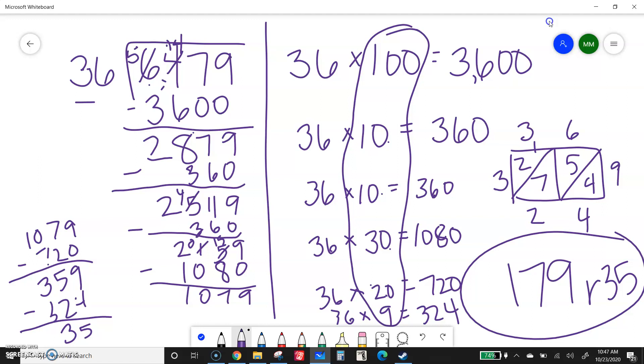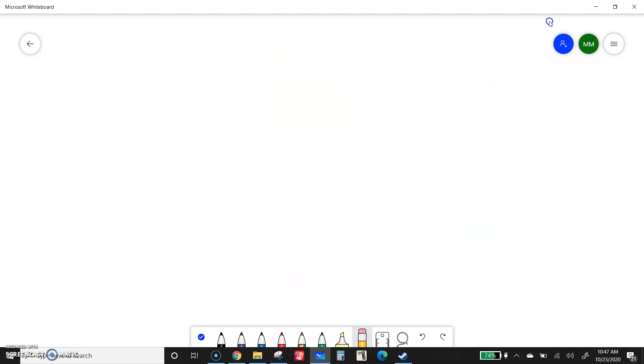So same process as if it's smaller numbers. It's just bigger so sometimes I have to do more groups. Kind of depends on just what the numbers end up being. Let me do one more example.